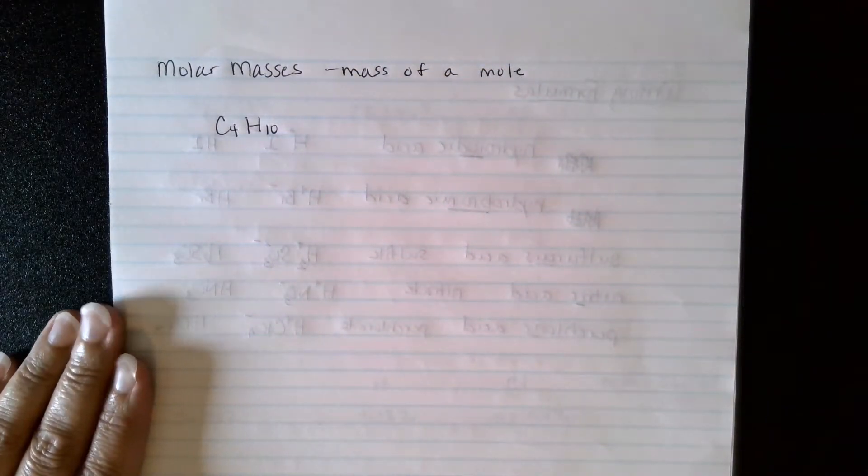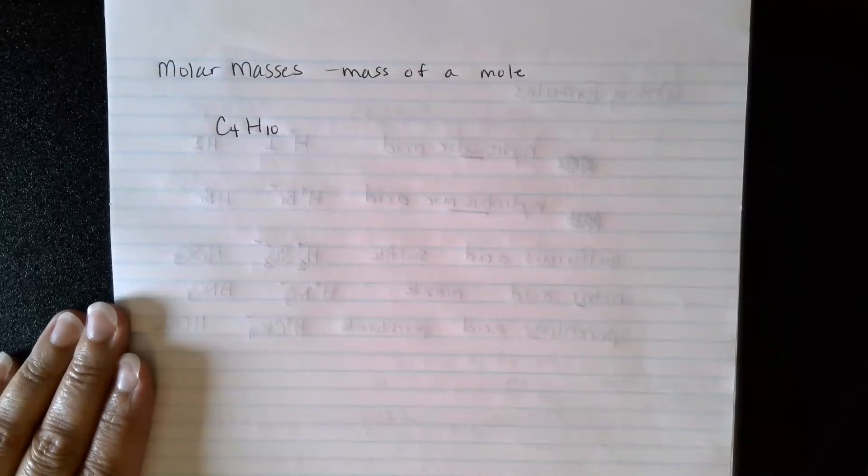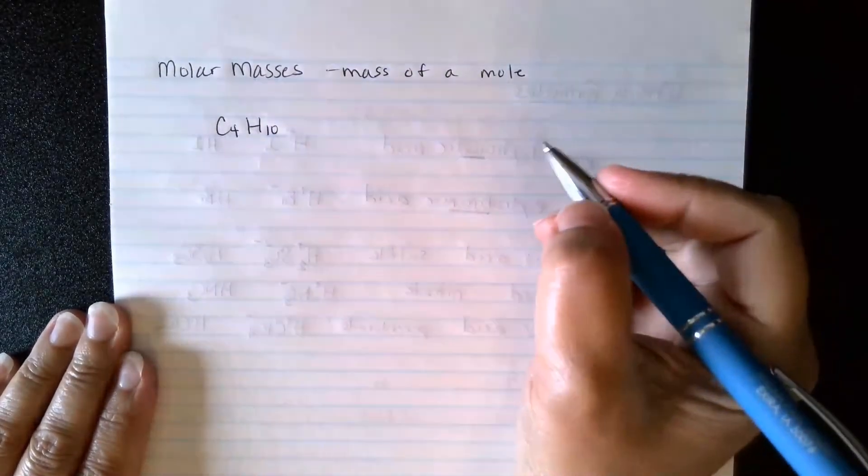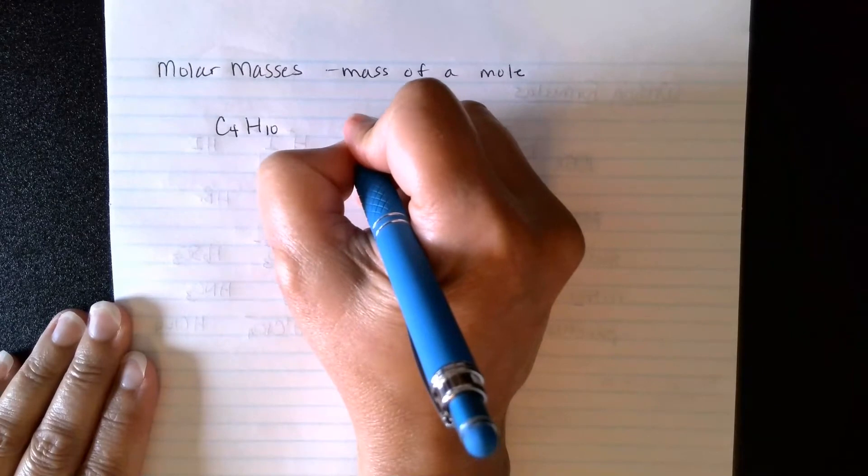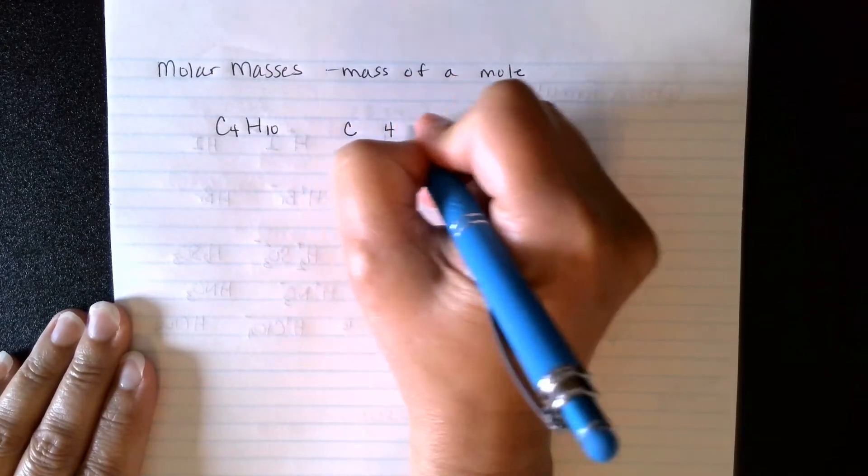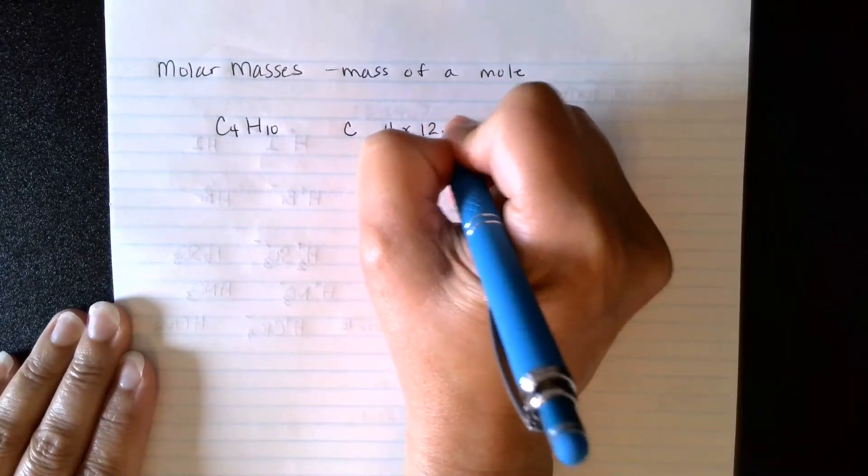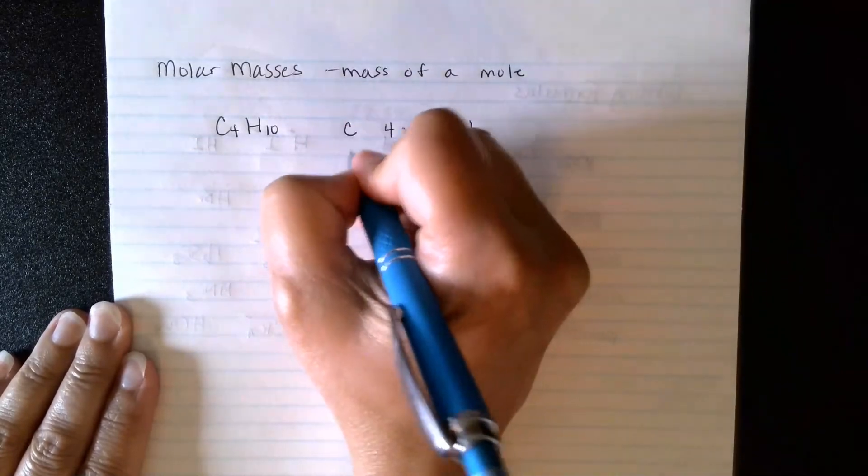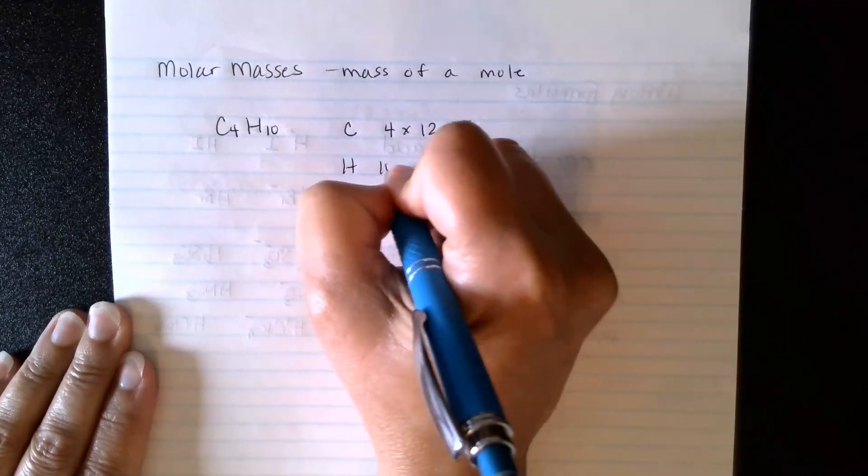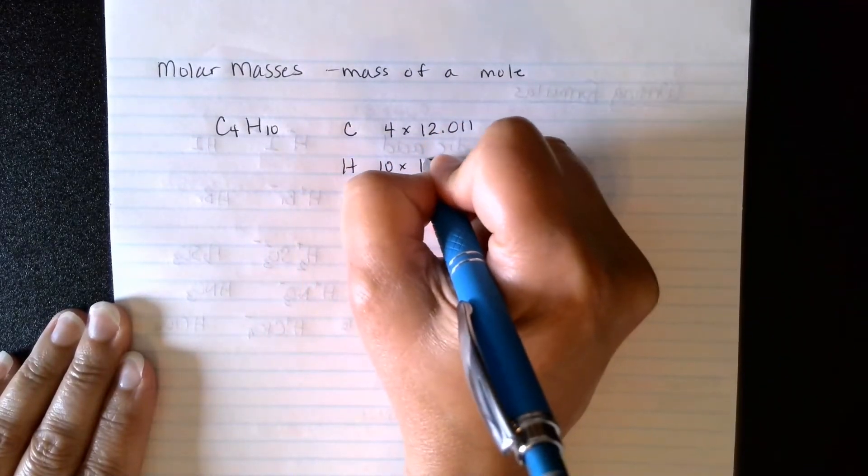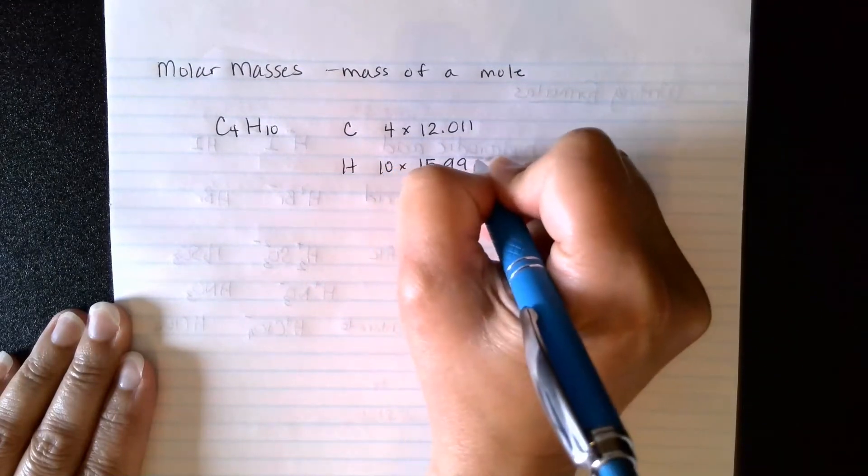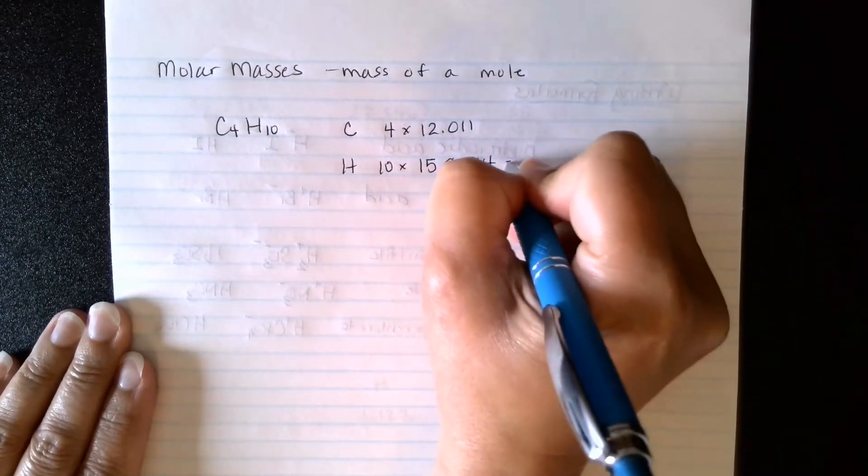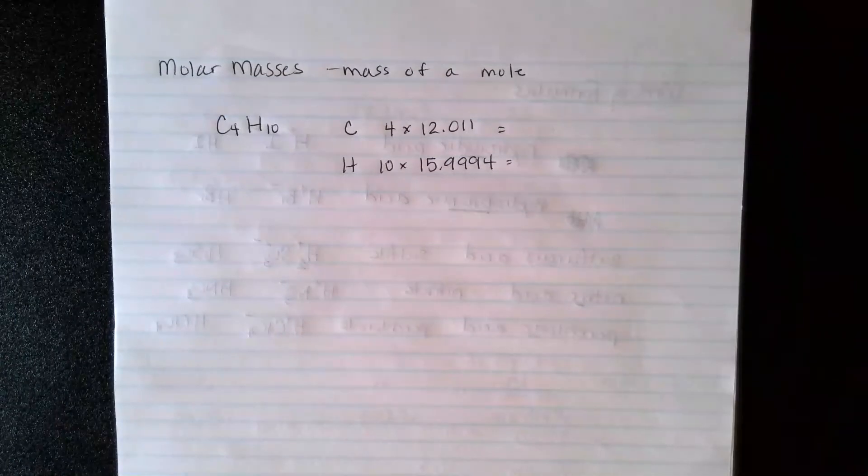We're just going to be thinking now about a compound. So if we have C4H10, that means I'm going to have four carbons. And I'm going to look up at the mass on the periodic table. And then I'm going to have ten hydrogens. And I'm going to look up its mass on the periodic table. And then I'm just going to add those up.